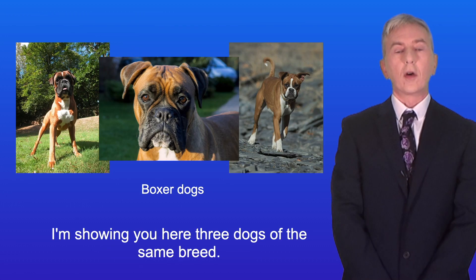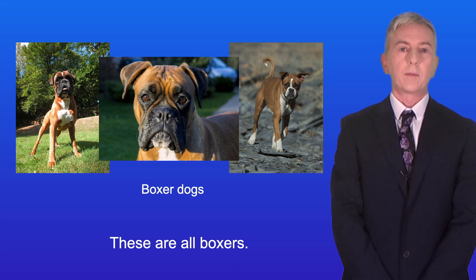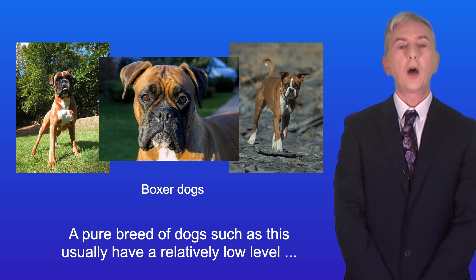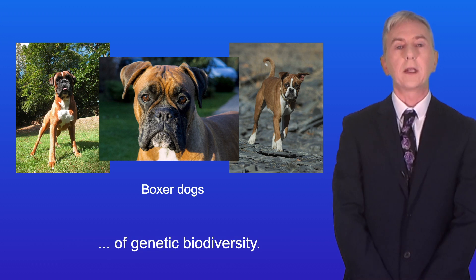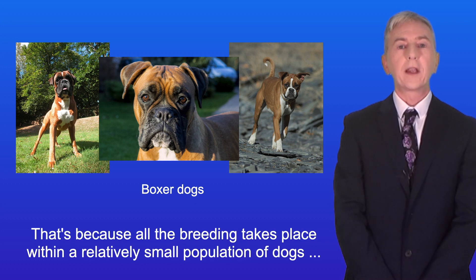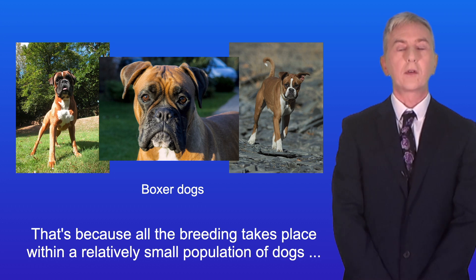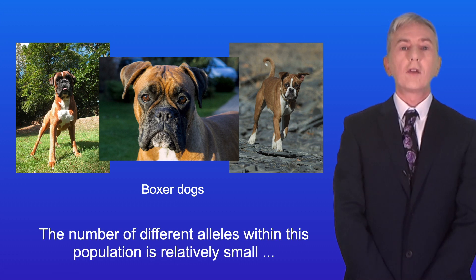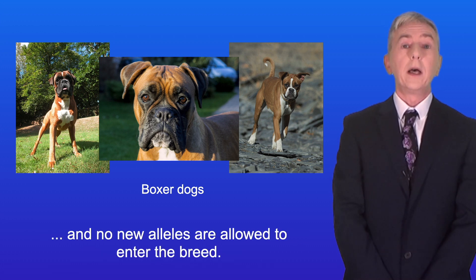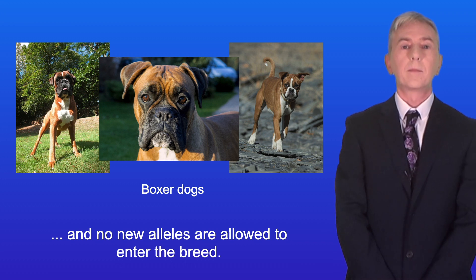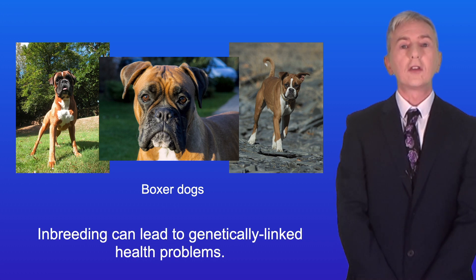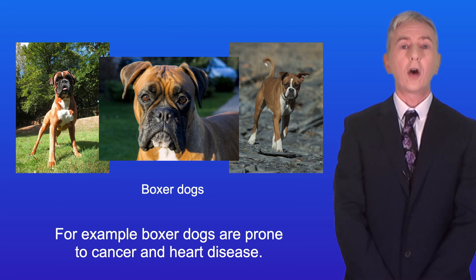I'm showing you here three dogs of the same breed — these are all boxers. A pure breed of dogs such as this usually has a relatively low level of genetic biodiversity. That's because all the breeding takes place within a relatively small population of dogs, carefully selected by humans. The number of different alleles is relatively small and no new alleles are allowed to enter the breed. This can cause inbreeding, which can lead to genetically linked health problems. For example, boxer dogs are prone to cancer and heart disease.